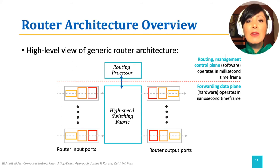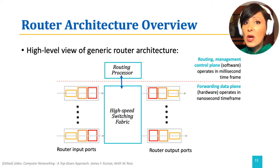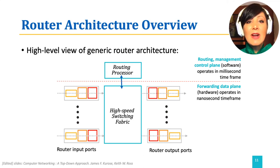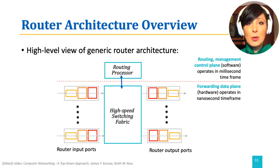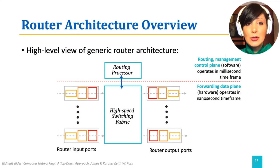In traditional routers, the routing processor runs the routing protocol. In SDN routers, the routing processor communicates with the remote controller to exchange the required information and receive the forwarding table entries.